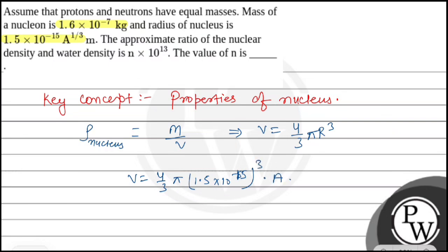Solving the volume, we get V = (4/3)π × (1.5)³ × 10⁻⁴⁵ × A, which gives V = 15.363×10⁻⁴⁵ × A m³. Here A is the number of nucleons.